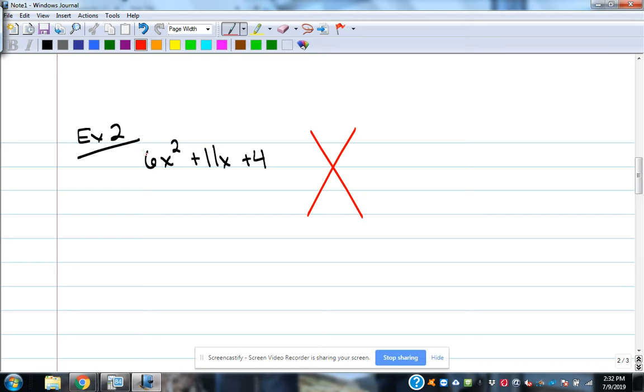We'll take the leading coefficient. 6 times 4 is 24. That's what goes in the top. In the bottom is the middle number, the 11. So we need the numbers that multiply to be 24 and add to be 11. 6 times 4 multiplies to be 24 but adds to be 10. So that's not it. 12 times 2 adds to be 14. So that's not it. 8 times 3 multiplies to be 24 and 8 plus 3 is 11.